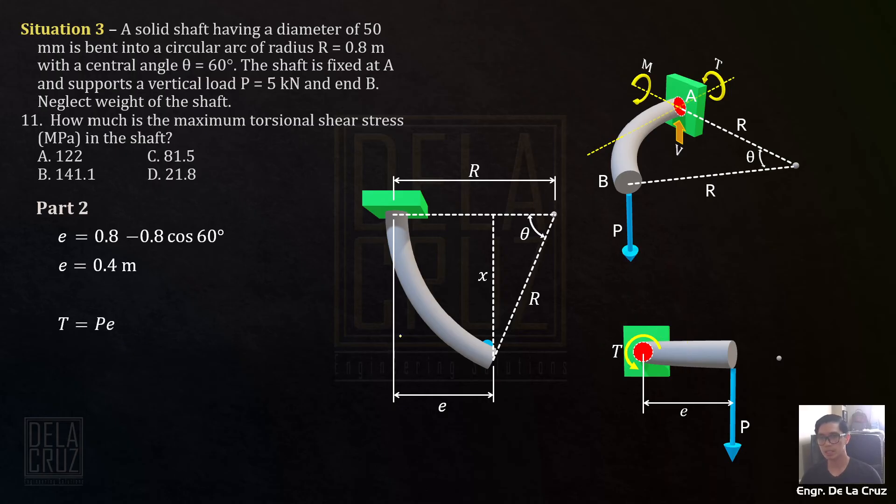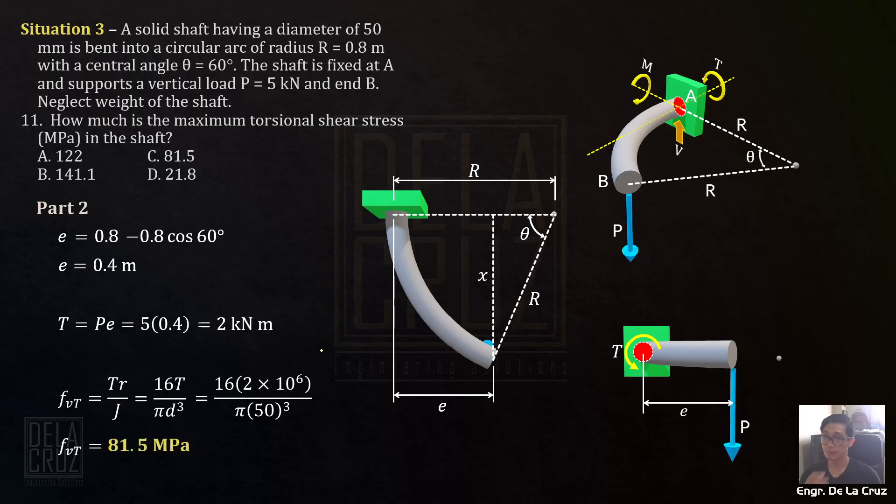We can now define the torsion. The torsion equals P times E, the torsional moment. P is 5 kN, E is 0.4 meters, giving 2 kN·m. Maximum torsional shear stress - this is the formula for circular section: TR over J. The derived formula for circular cross section is 16T over πD³. Solid cross section. If it's hollow, it's different. The torsional moment is 2000 Nm times 10⁶ divided by π times diameter of the shaft, which is 50, raised to 3. The answer is 81.5 MPa.